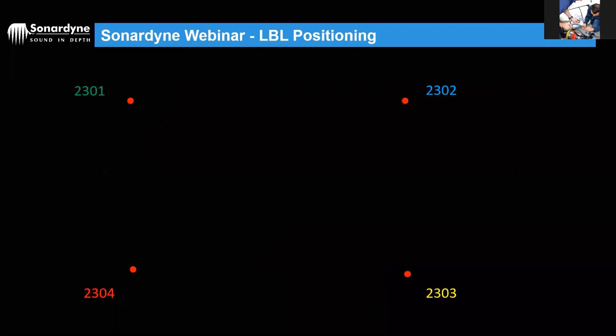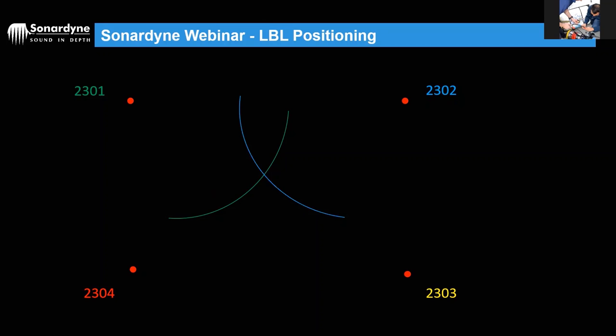Finally, how position is derived: using trilateration — the same principle as GPS. The two-way travel times are converted to ranges. The first range from beacon 2301 places the ROV on a circle (arc, or line of position) around that beacon. The second range from beacon 2302 gives a second circle, and the intersection narrows down the possible positions. Additional ranges from further beacons resolve the final position.